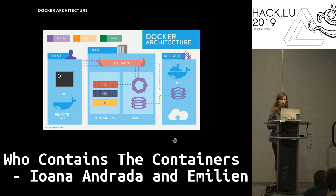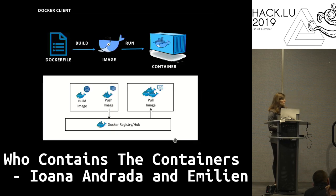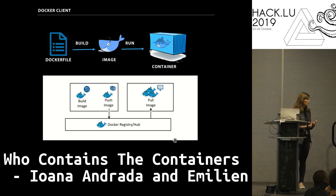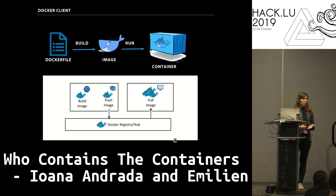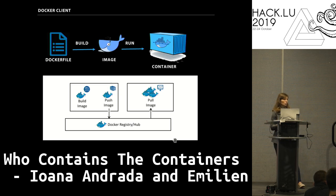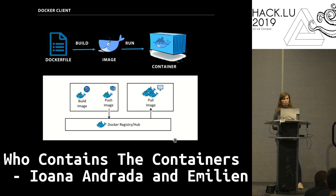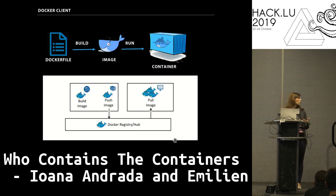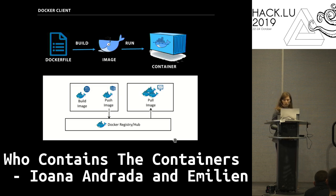You have to take images from somewhere, so you go to the registry to pull them. To build an image, you have a Dockerfile where you put everything you need — what application you need, what to install. You build it into an image and then use that image to run a container. Nowadays, most of the time you build the image, push it to a Docker registry hub, and then people just pull and run it.